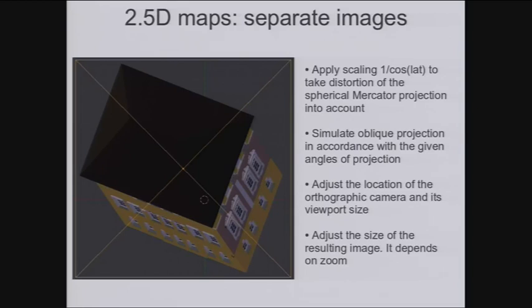So here is the first approach, where for each model, a separate image is rendered. The procedure is simple. Apply scaling to take distortion of the spherical Mercator projection into account. Then simulate oblique projection in accordance with the desired angles of projection. Blender doesn't have built-in tools for oblique projection, but it can be simulated. And then adjust the location of the orthographic camera and its viewport size. And then adjust the size of the resulting image.